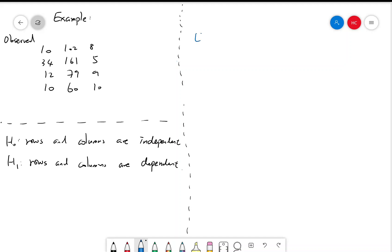So we need to calculate the expected values for all 12 entries. So let's do that. One, two, three, four rows and three columns. Before that we need to calculate the totals of the rows and the columns in the original observed values.